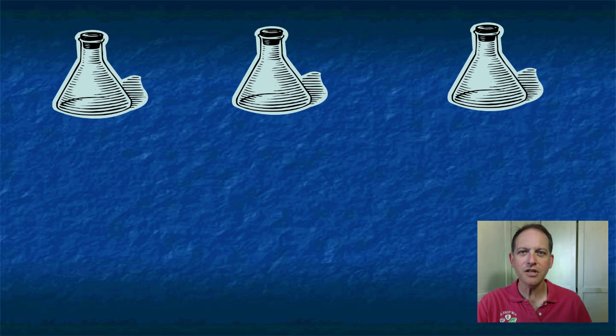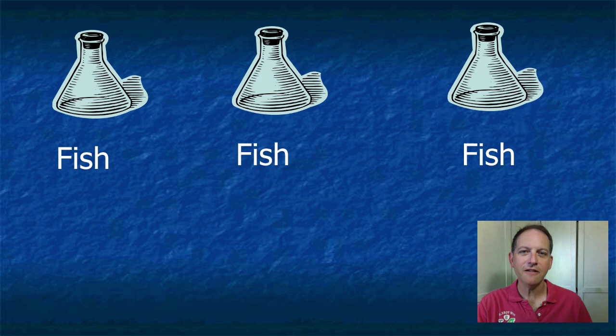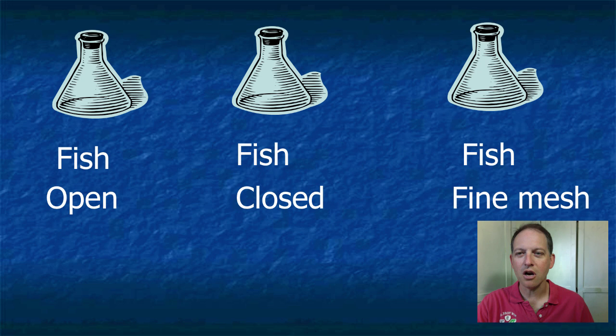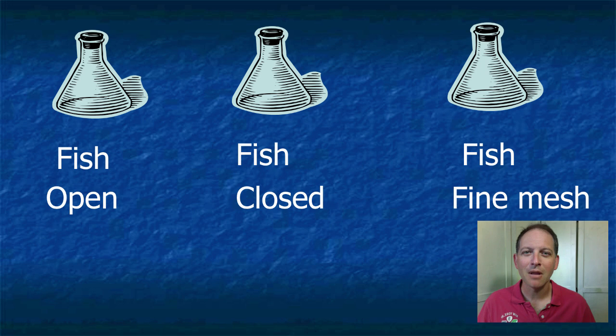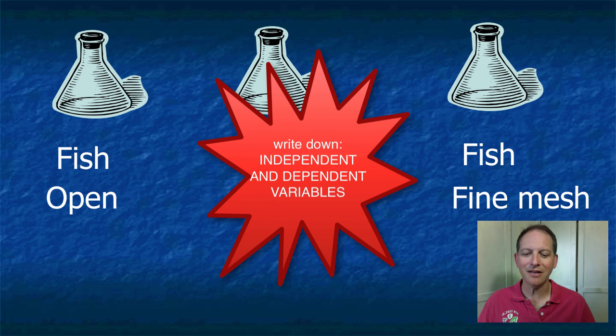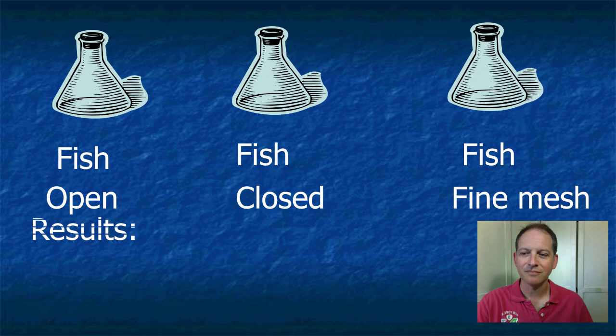Yes, lovely hair. This is the experiment he came up with. He took three vials — three jars — and put dead fish in each one. The first jar he left completely open. The second jar he closed up tight. The third jar he put a fine mesh over the top, something like a screen. Then he left them out in the hot Italian sun to see what happens. What are the dependent and independent variables in this experiment? Put your answers in the side of your sheet.